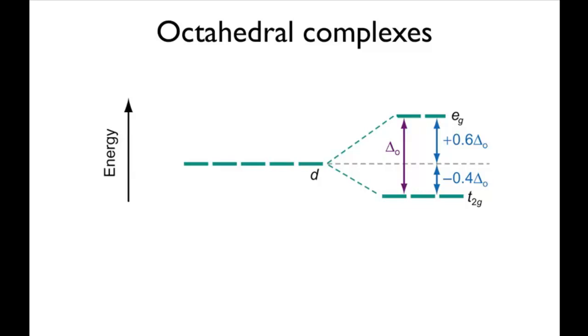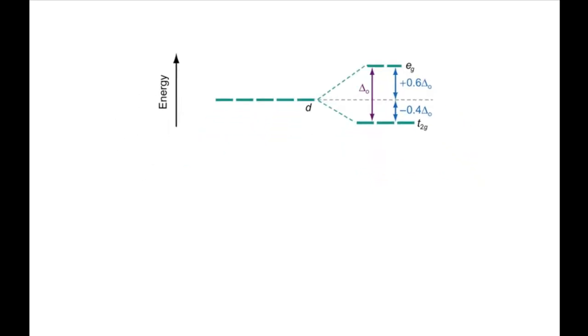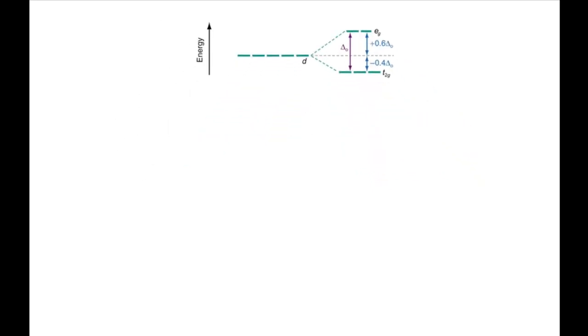The manganese III plus ion has the electronic configuration argon 3D4. We'll look at the possible arrangements of D electrons for this ion in an octahedral complex.